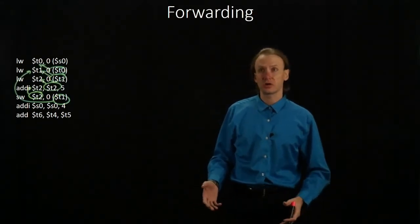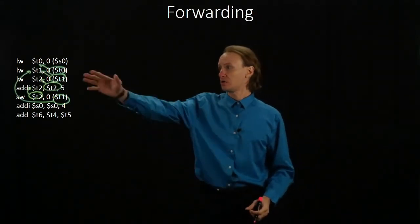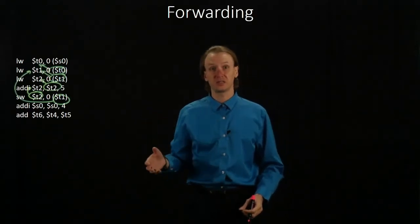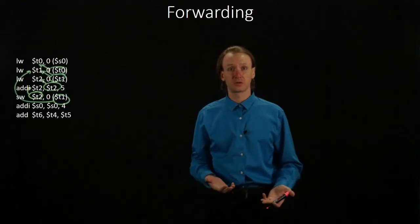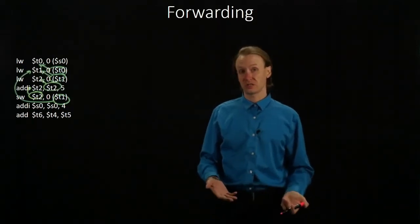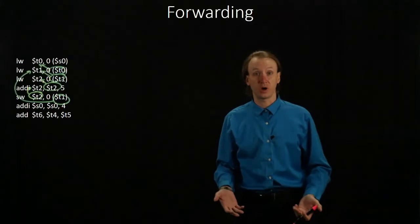We saw this block of code earlier, where we saw that we have this set of dependencies, and we saw how we can add no-ops to avoid the data hazards. But this time, we're going to be using forwarding to get around as many of those data hazards as possible.